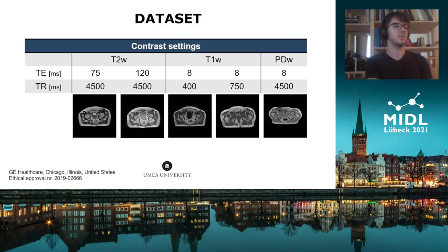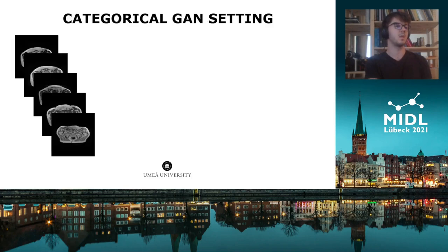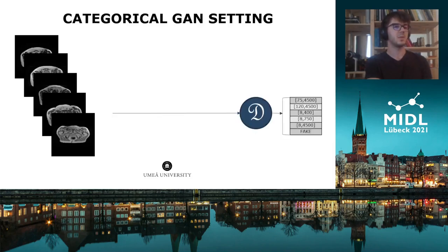That means that we only need multi-contrast scans for the evaluation phase, but not for the training. Since we don't need paired data for training, we are taking the semi-supervised approach of categorical GANs, where the discriminator part is trained to determine the contrast of the input image, or to classify it as fake.